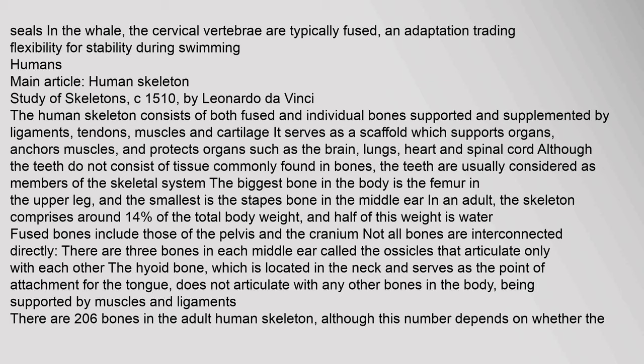The human skeleton consists of both fused and individual bones supported and supplemented by ligaments, tendons, muscles and cartilage. It serves as a scaffold which supports organs, anchors muscles, and protects organs such as the brain, lungs, heart and spinal cord. Although the teeth do not consist of tissue commonly found in bones, they are usually considered members of the skeletal system. The biggest bone in the body is the femur in the upper leg, and the smallest is the stapes bone in the middle ear. In an adult, the skeleton comprises around 14% of the total body weight, and half of this weight is water.